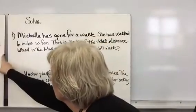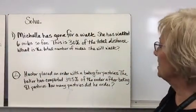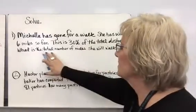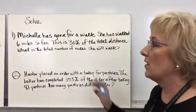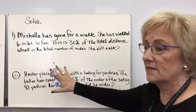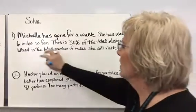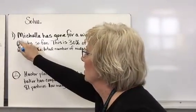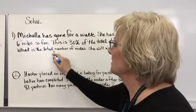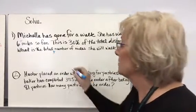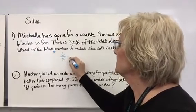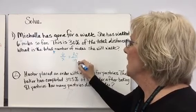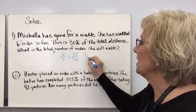Let's look at a couple of these. It says Michelle has gone for a walk and she has walked six miles so far. This is 30% of the total distance. What is the total number of miles that she will walk? We know we're doing part over whole. We can set this up as a proportion. Six miles is what she's done so far, and the total is going to be X because that's what I don't know. So it's going to be 6 over X equals 30 over 100.